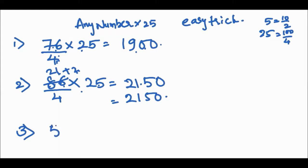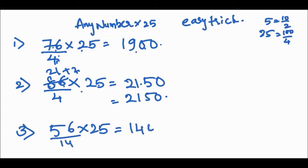Third example: 56 into 25. 4 times 14 is 56, so 56 ÷ 4 = 14. The answer is 1400, because two zeros come from the 100 in 25 = 100 ÷ 4.